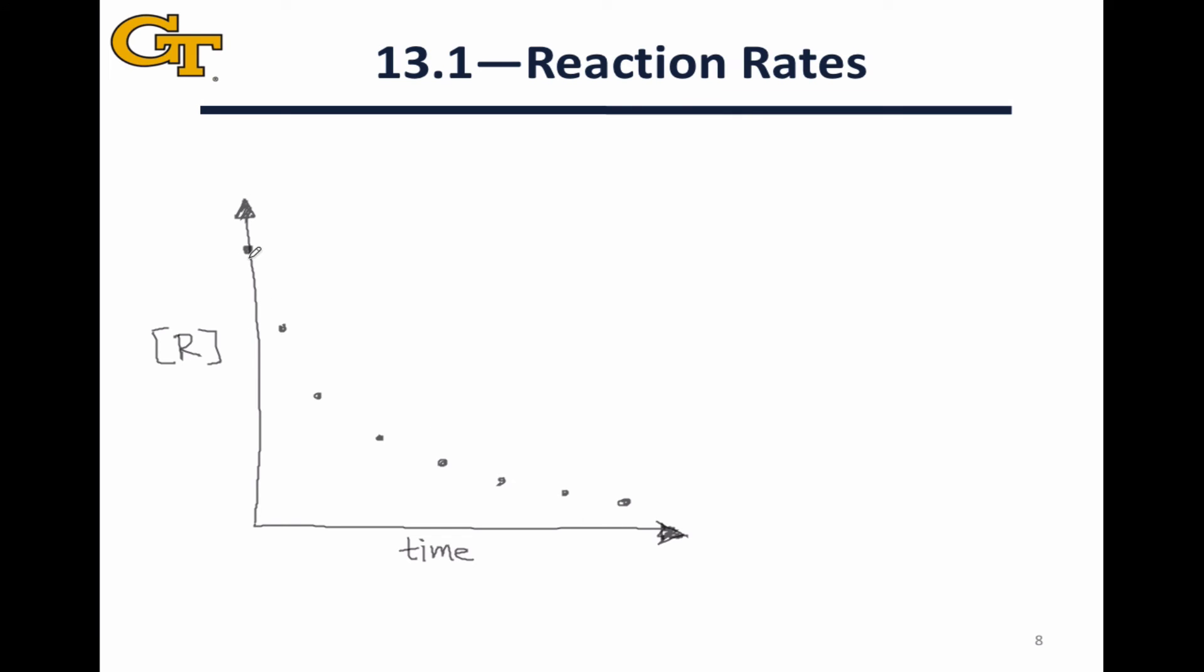So clearly the reactant is going away as the reaction occurs, but notice that the rate, the steepness of the decrease, is different between each pair of points. So we can treat each pair of adjacent points as kind of a final and an initial, if you will, for calculating an average rate.